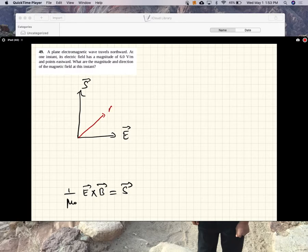So B field has to be in that direction. So in this problem they call this north, this east. So this is into the ground. B is into the ground. Well, the diagram shows you the direction of B.